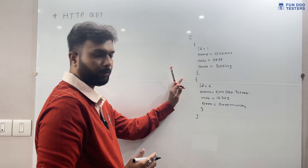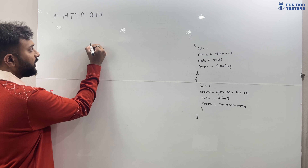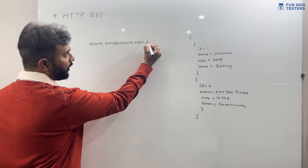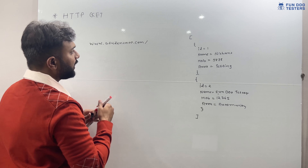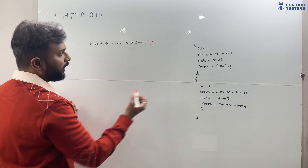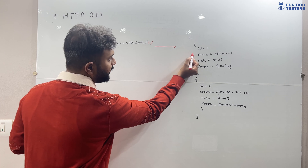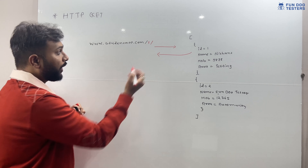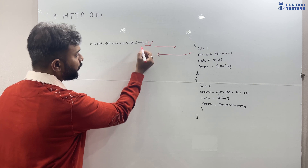To make a GET request, we write www.studentapp.com/1 — the value '1' is automatically considered as id=1. This request goes to the server and we receive that student's data on the client. This is called a path parameter.